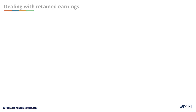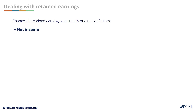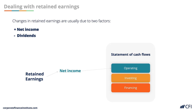Changes in retained earnings are usually due to two factors: adding net income or net loss for the period to the prior period's ending retained earnings, then deducting any dividends paid. We can disaggregate this into two components on the cash flow statement. Net income flows to the top of operating activities, and dividends flow to the financing section under financing activities.